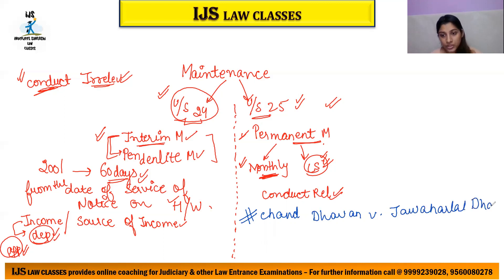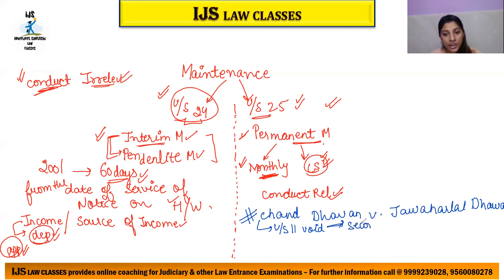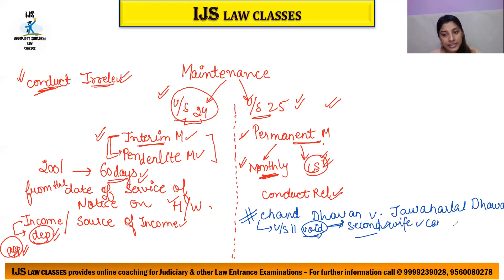In Achan Dhawan versus Jawahar Lal Dhawan, it was held that under Section 11, even if a marriage is void because the monogamy condition was violated — i.e., bigamy was committed — the second wife is still protected. Although the second wife's marriage is void because the first marriage already existed, the second wife can claim maintenance.